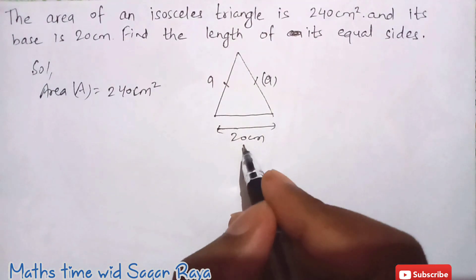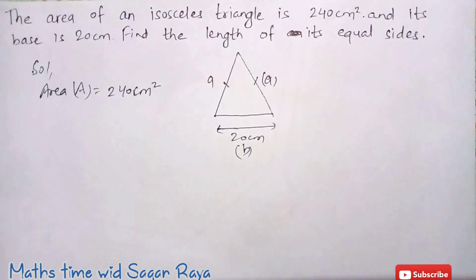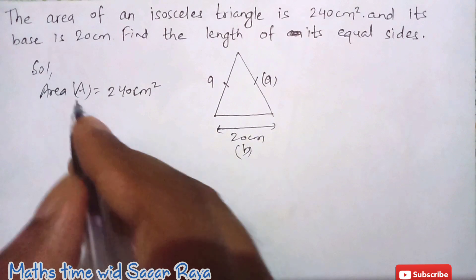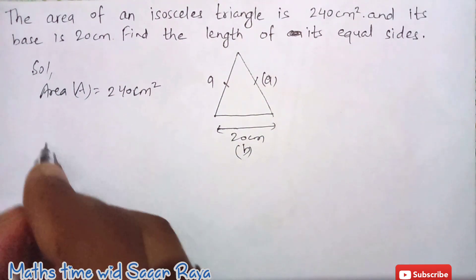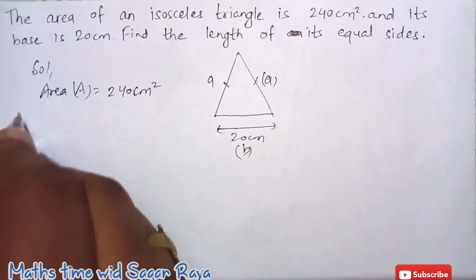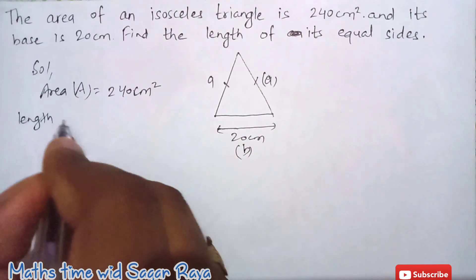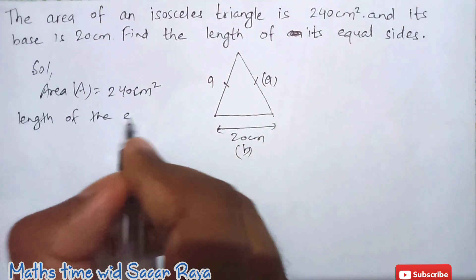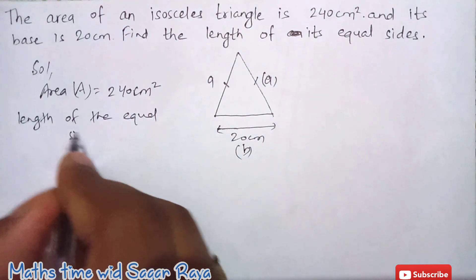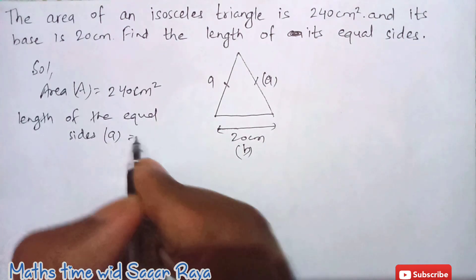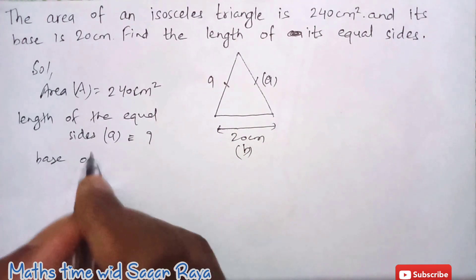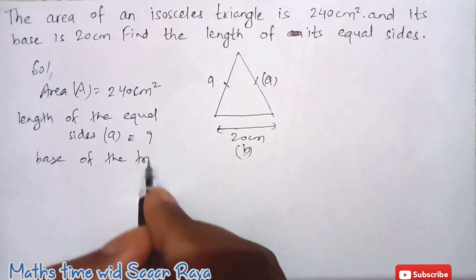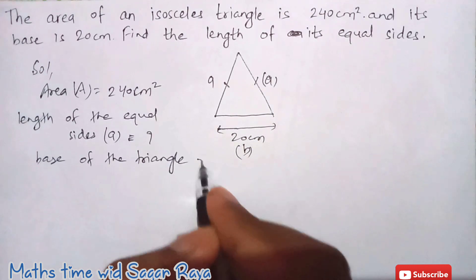And the base of the triangle is given 20 cm, so base is given 20 cm and I'm supposing it as b. And area is given 240 cm square.